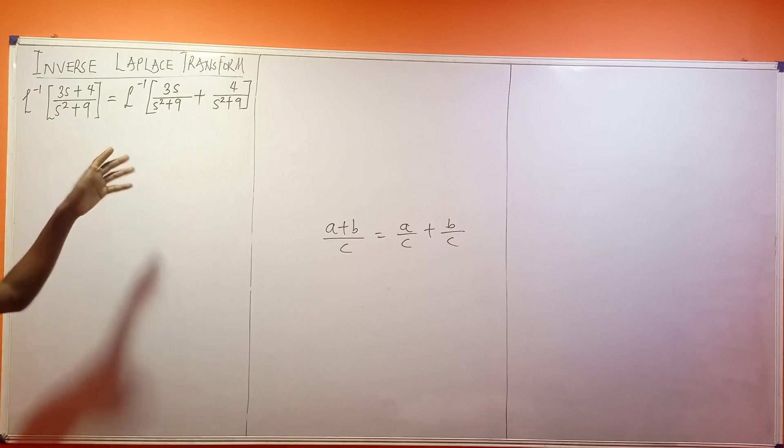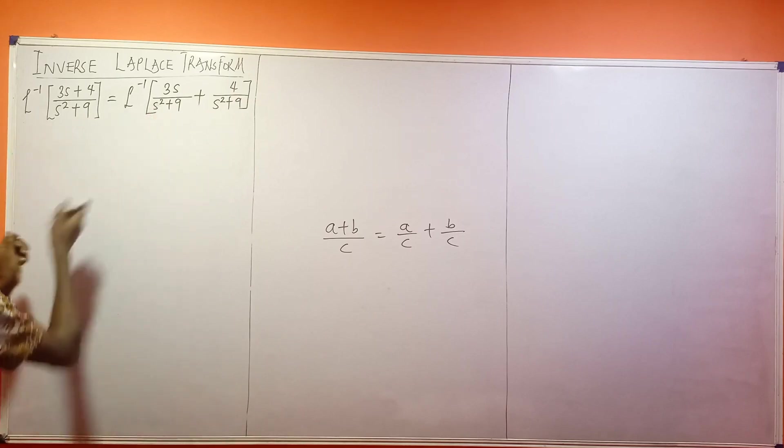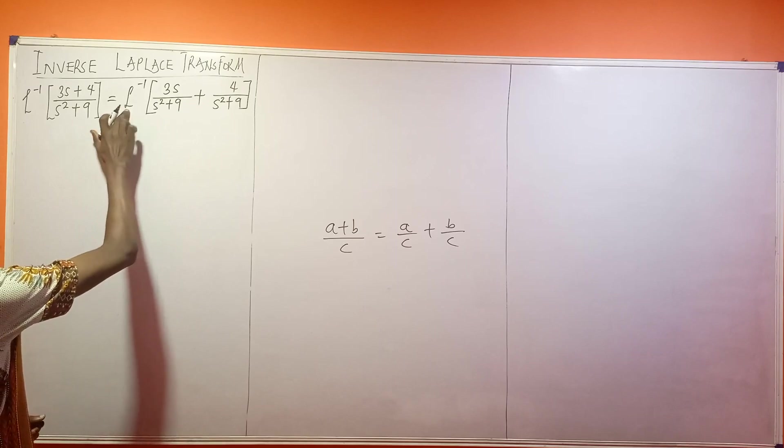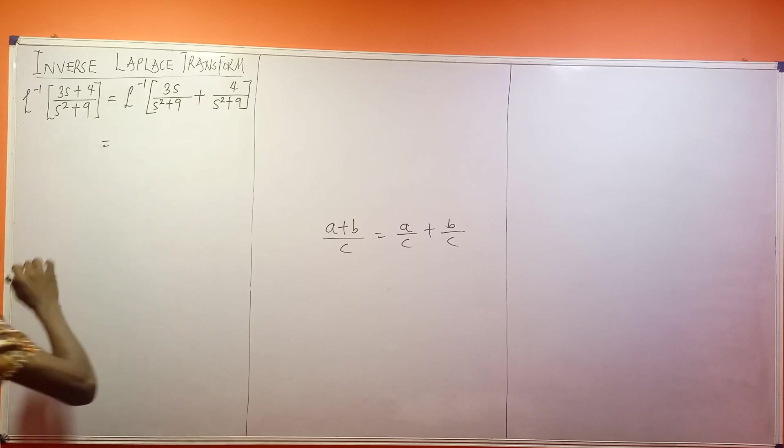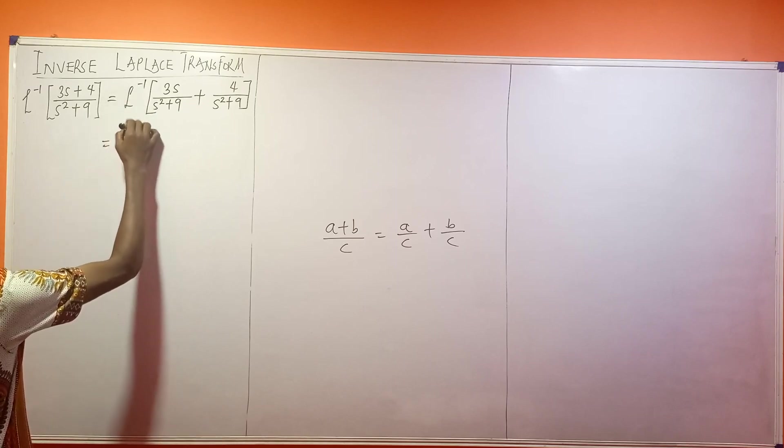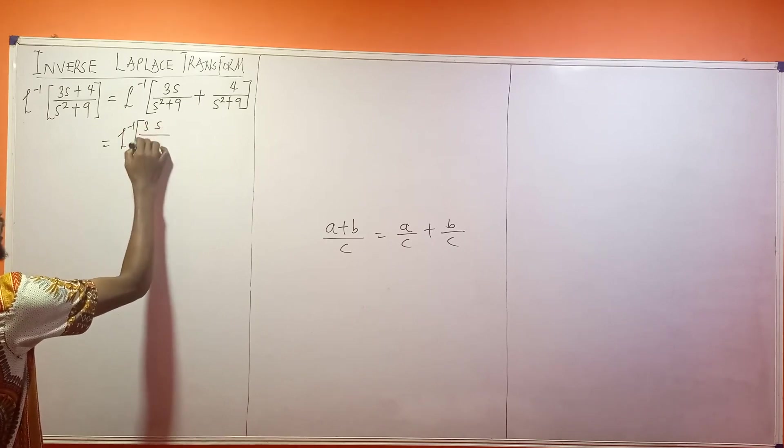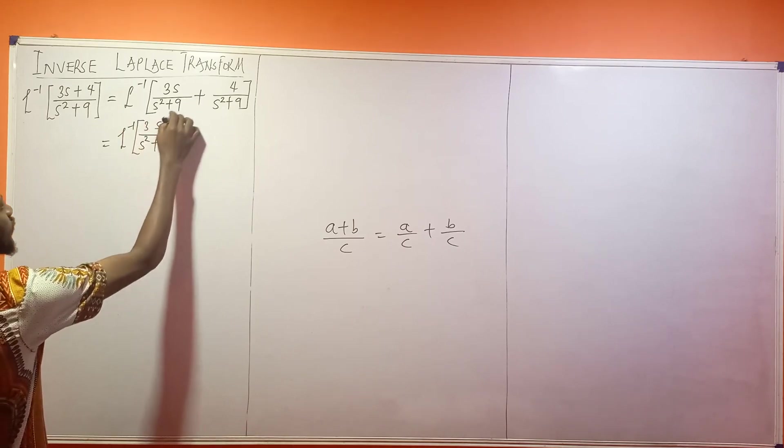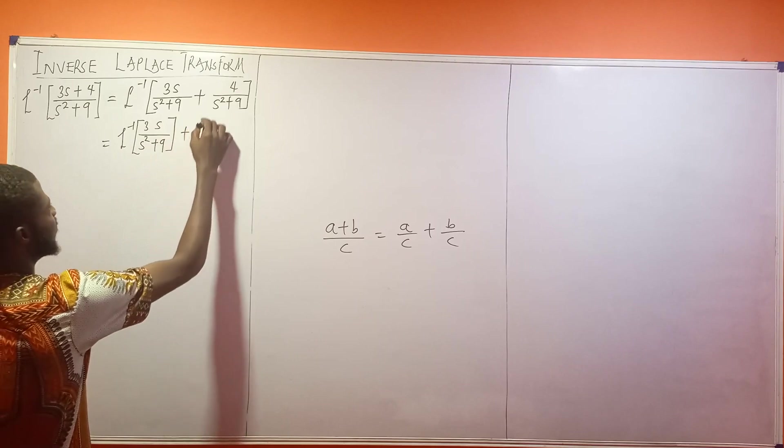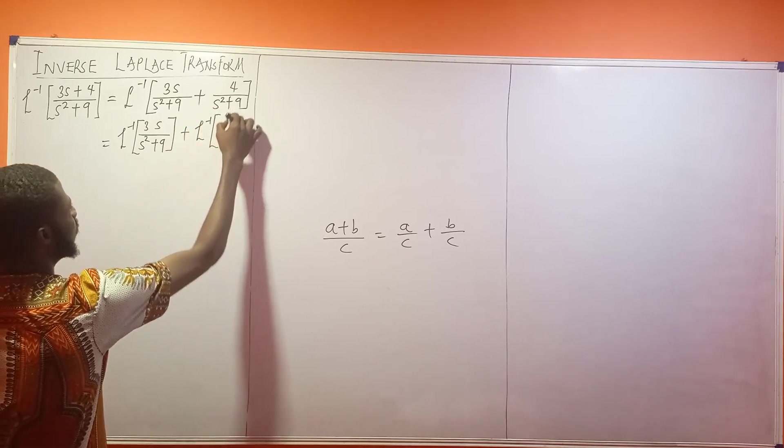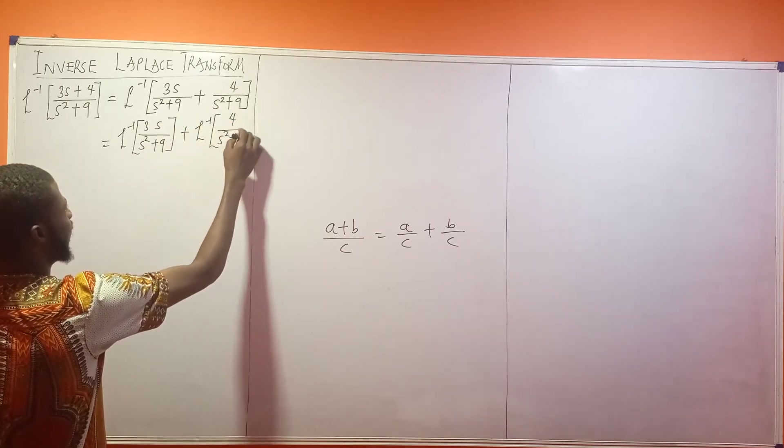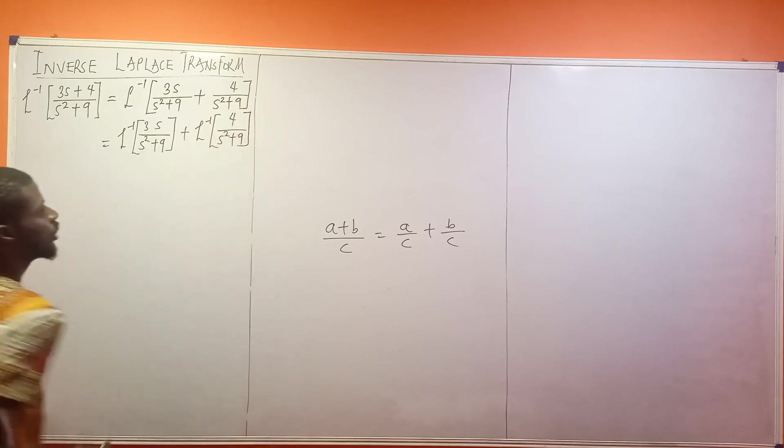Now, the next thing I will do is I'm going to separate this. So I'm going to distribute the inverse Laplace. So this will be the inverse Laplace of 3s divided by s squared plus 9 plus the inverse Laplace of 4 over s squared plus 9.